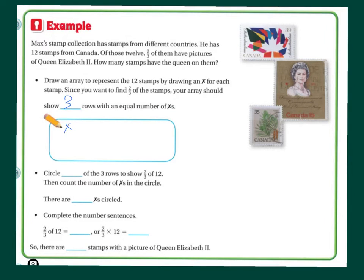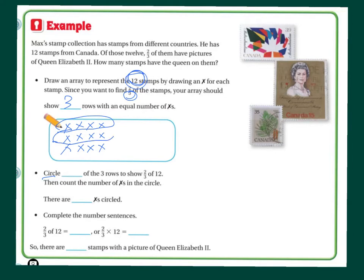So, if I'm doing three rows — one, two, three — and I'm going to keep going until I get to 12: four through twelve. Now I have 12 stamps arranged in groups of three. It says circle blank of the three rows to show two-thirds of 12. Well, two-thirds of 12: if each row is a third, there's one-third and there's two-thirds. So I'm going to circle two of the three rows to show two-thirds.